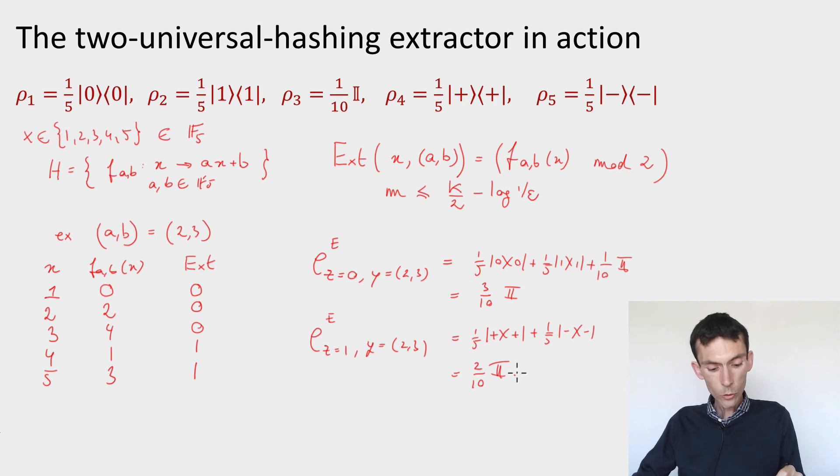Note that this side information is not completely independent of the output. In one case I get the identity scaled by 3 tenths, in the other the identity scaled by 2 tenths. The reason for this is that my example is too small. I'm taking things in F5 and then mod 2, and when I mod 2 there's three elements that have even parity and two that have odd parity, so this is not balanced. So this is an artifact of this simple example.